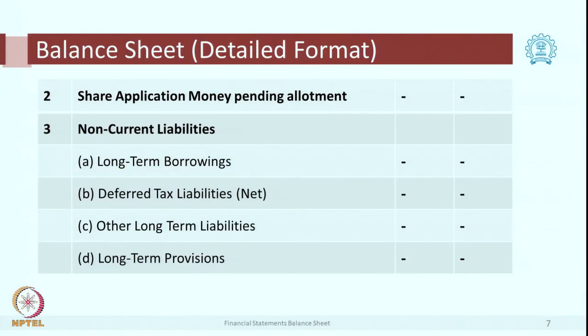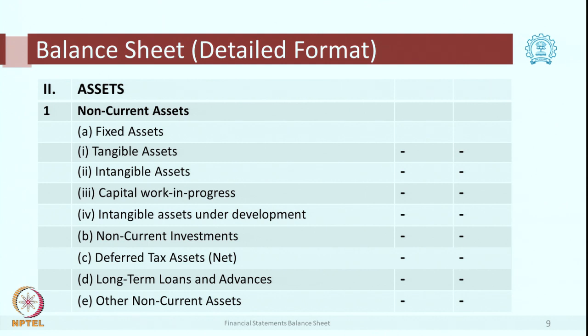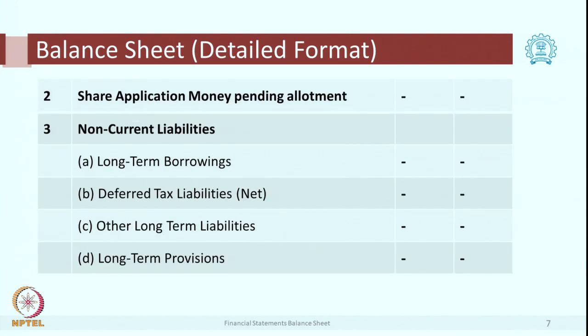Then you have got money received against share warrant. Then we went on to discuss share application money pending allotment and non-current liabilities, then current liabilities. Then we discussed assets, again divided as non-current assets followed by current assets. If we look at the format, it is as per the permanence — what is permanent comes first.